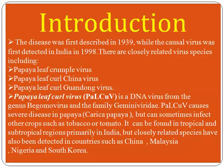Papaya leaf curl virus causes severe disease in papaya — Carica papaya is the scientific name of papaya — but can sometimes impact other crops such as tobacco and tomato also. It can be found in tropical and subtropical regions, primarily in India.